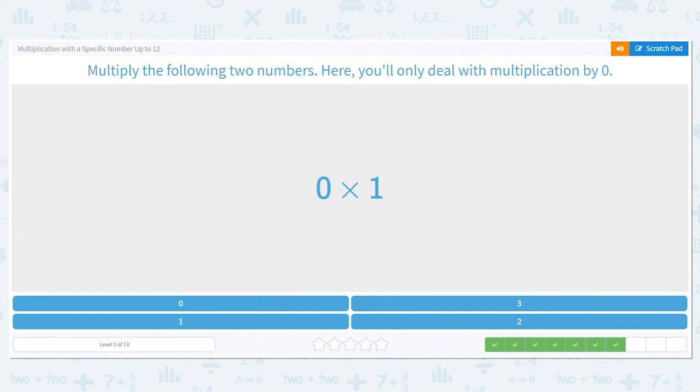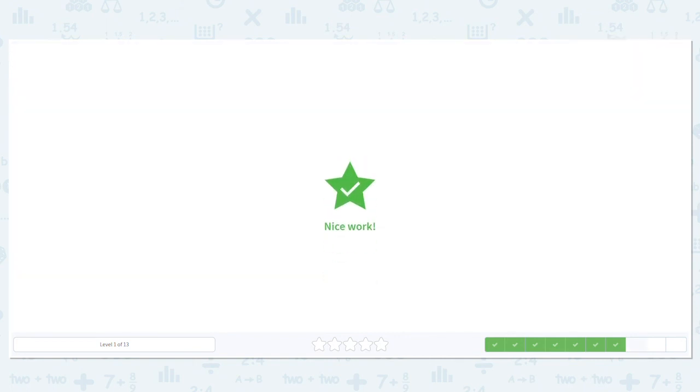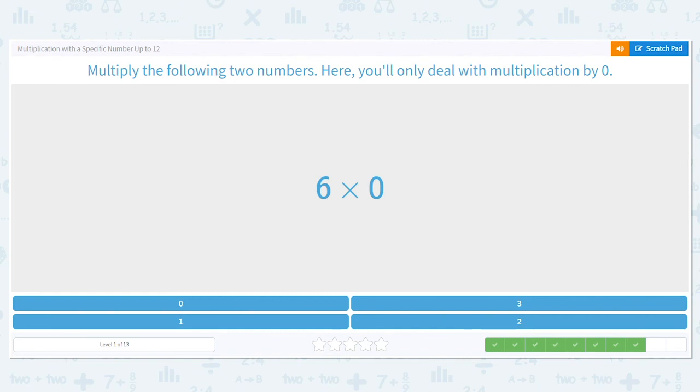Zero, three, one, or two? It's zero. How about six times zero? That means I have six groups and I have nothing to put in any of those groups. So how many total items do I have? Is it zero, three, one, or two? It's zero.